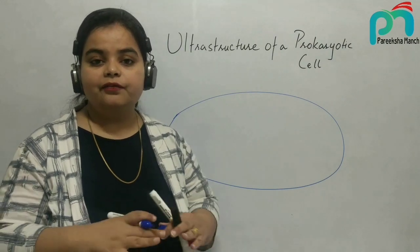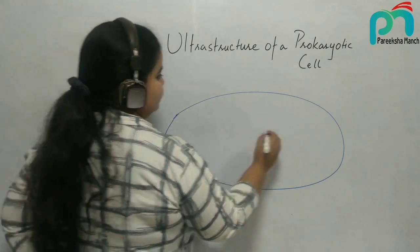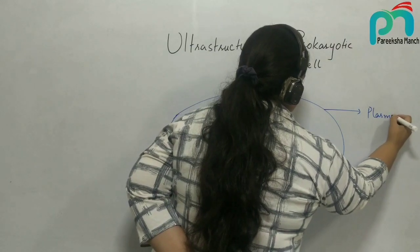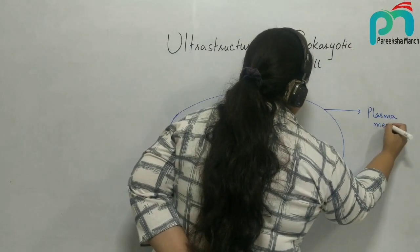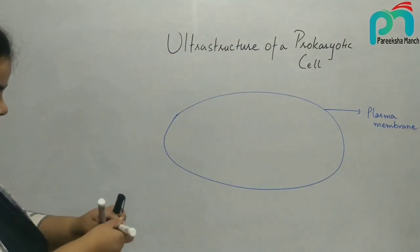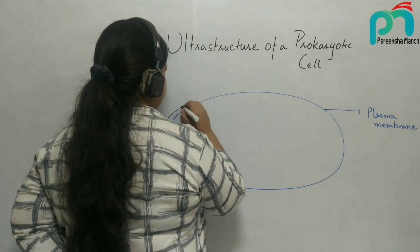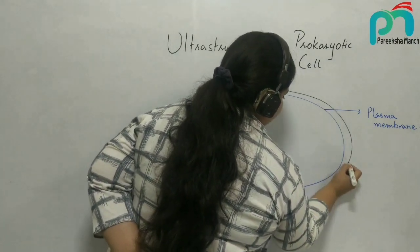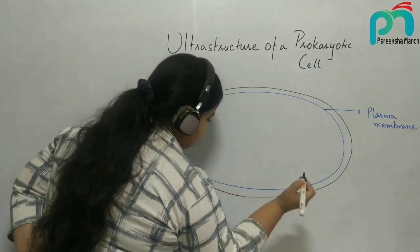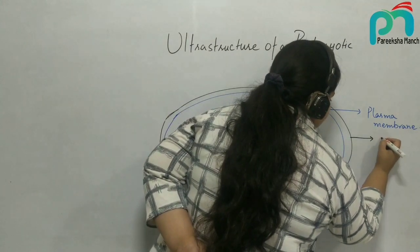Bacterial cells are well protected inside a tough covering. First we will be drawing the plasma membrane — this is the plasma membrane of bacteria. Just as plant cells are protected by a cell wall because they have to live in harsh climatic conditions, similarly bacterial cells also have a cell wall.